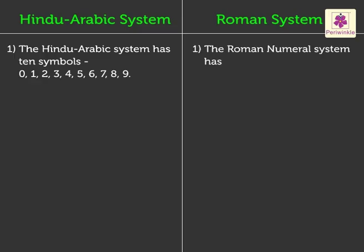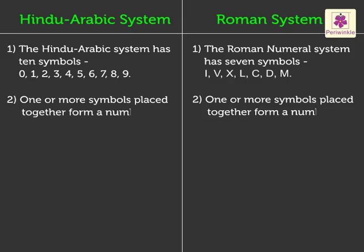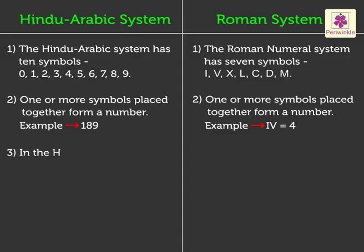The Roman system has only seven different symbols: I, V, X, L, C, D, M. We can see that all these symbols are capital letters. In both systems, one or more symbols placed together form a number. For example, in the Hindu-Arabic system, when we place one, eight, nine together, we get the number one hundred eighty-nine. In the Roman system, I and V placed together gives the number four.